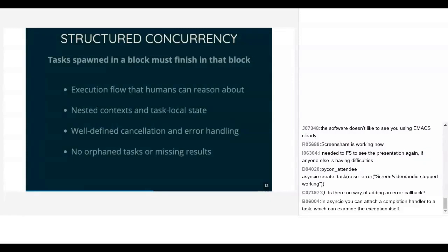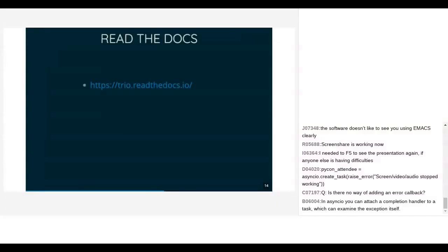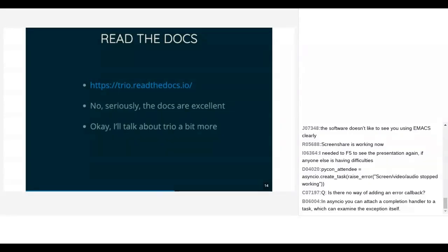The third part of this talk's title is Trio — the framework we'll be using, which is built on the ideas of structured concurrency. The best way to learn about Trio is to read the documentation — so I think we're done here and you can all go read the docs and everything will be great. The docs are actually excellent, so you could just do that, which is what I did. But since we still have a few minutes left, I will actually talk about Trio some more.